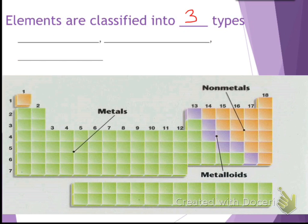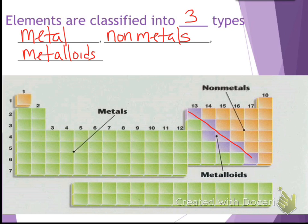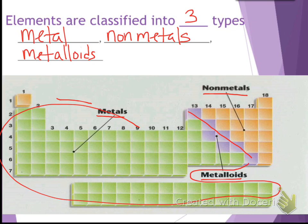Elements are classified into three types. They are classified into metals, non-metals, and metalloids. So you can see that metals make up the majority of the periodic table. I mean, look at all of them. And then you have your non-metals, which is a smaller portion. And then your smallest portion is metalloids. They're the purple ones.